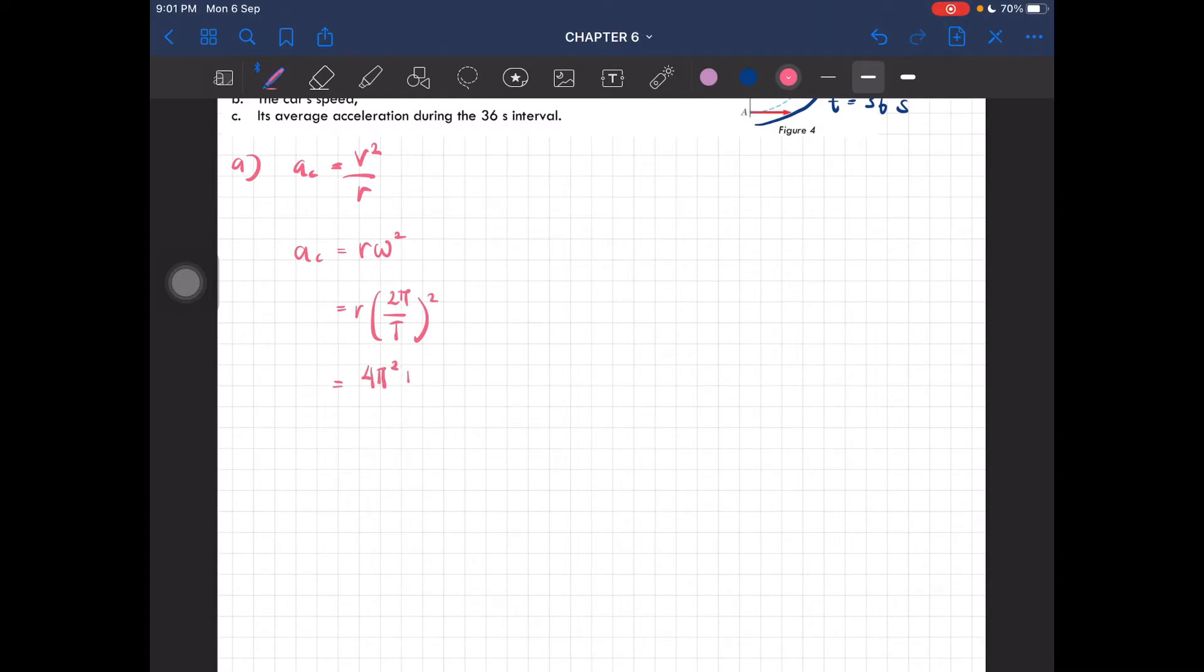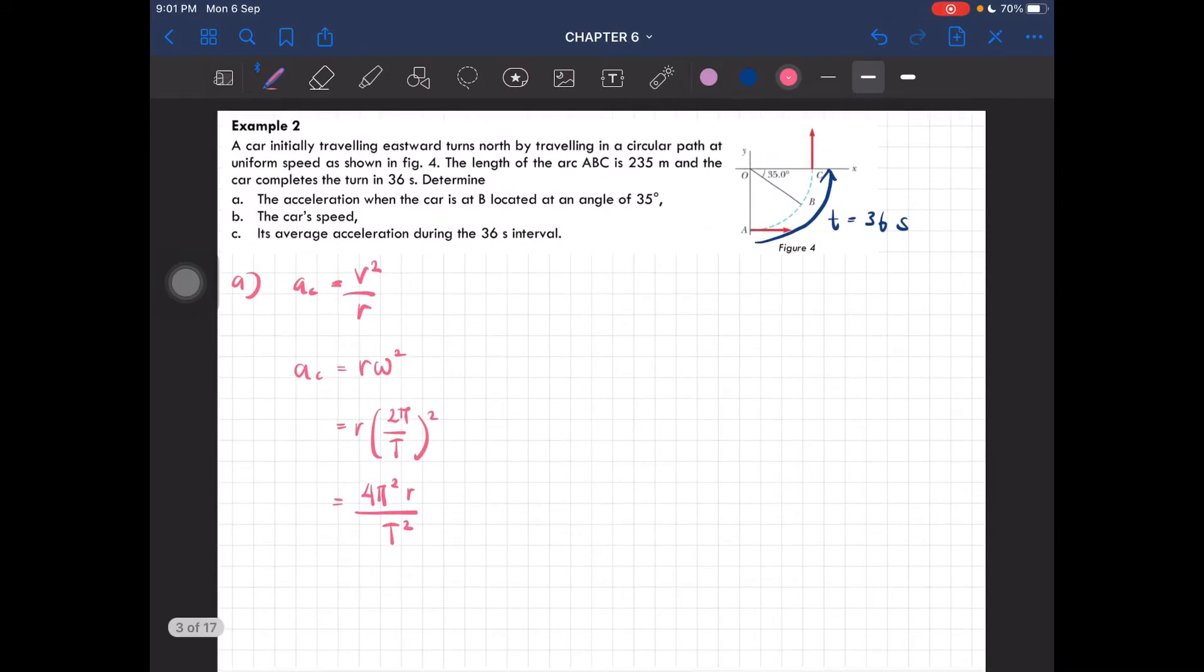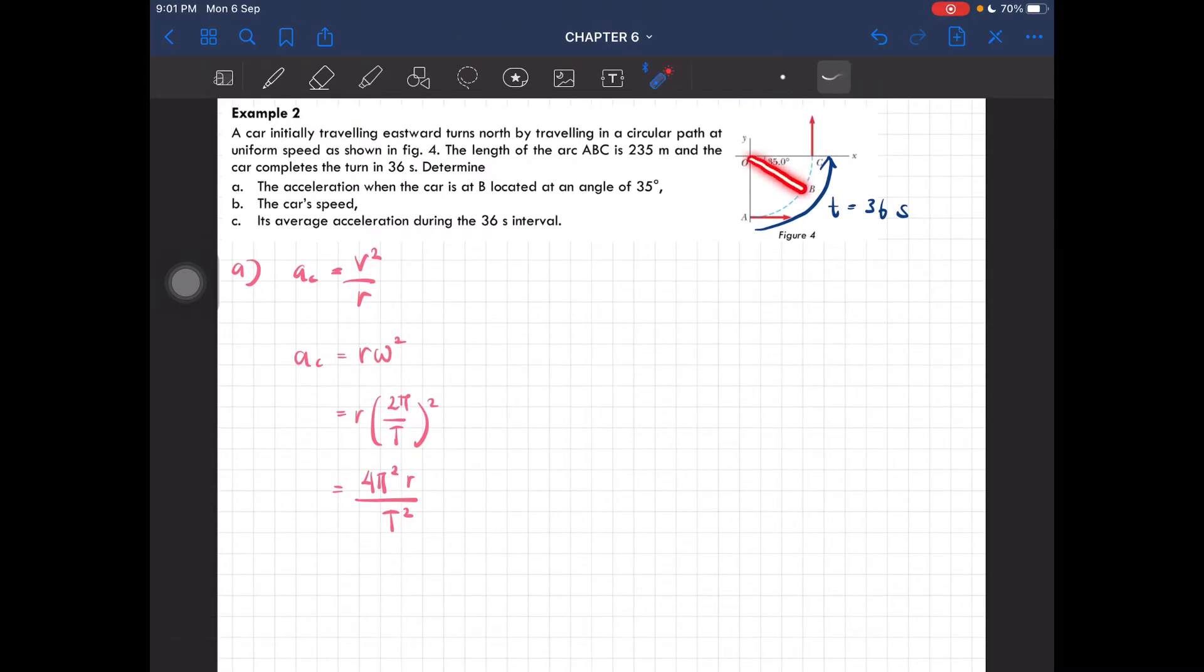Do we have the radius? No, we don't have the radius of this circle. To find it, we use the formula s = rθ, where s is the arc length depending on the angle theta. For the full arc ABC with angle 90 degrees, we use the 235 meter length.